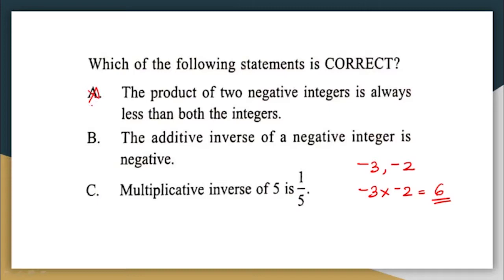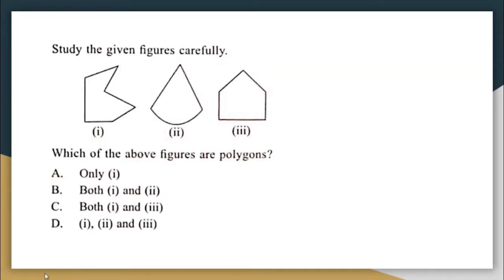The second answer option says the additive inverse of a negative number is negative — this is also wrong, because the additive inverse of a negative integer is always positive. The third statement says the multiplicative inverse of 5 is 1 by 5 — yes, that is correct. So your correct answer here is option C.